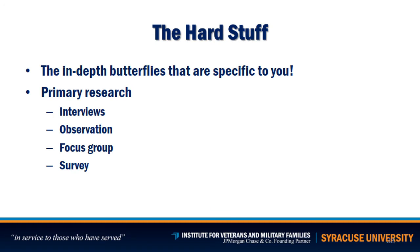The hard stuff, when it comes to figuring out your market, is the in-depth research specific to you, which is conducted through primary research. There are four ways to conduct primary research. Primary research is the most time-consuming research you need to do, but also the most useful and appropriate. At the end of the day, your entire business plan rests upon the shoulders of your primary research and your ability to prove that there is a market for what you are trying to do. The four types are: interviews, observation, focus groups, and surveys.